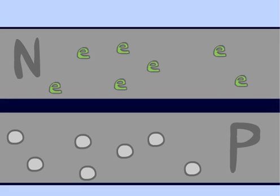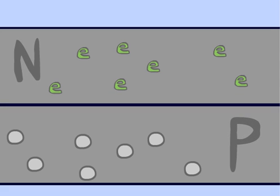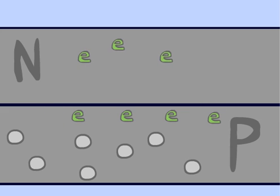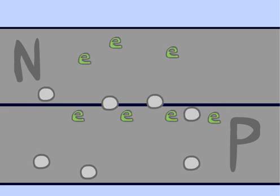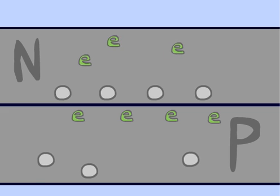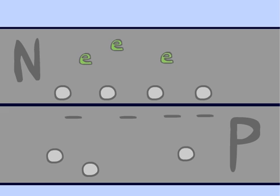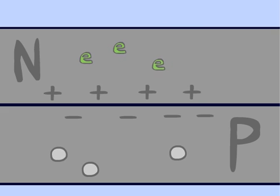Both layers start out electrically neutral, but when they are put together, some electrons move over to the P layer, and some holes move over to the N layer. This causes the first few rows of molecules in the P layer to become negative, and the first few rows of molecules in the N layer to become positive.